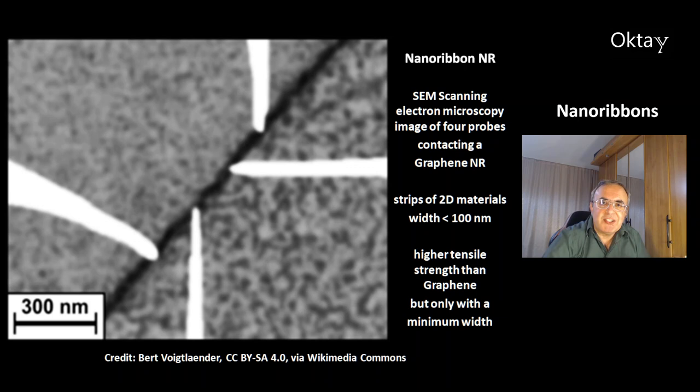Hi, welcome to today's video about nanoribbons, unique materials of the 21st century. This is a nice picture of a nanoribbon — a scanning electron microscopy image of four probes contacting a graphene nanoribbon, shown in black.